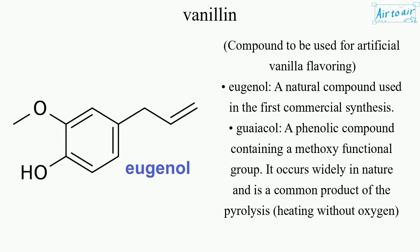Eugenol is a natural compound used in the first commercial synthesis of vanillin. Guaiacol is a phenolic compound containing a methoxy functional group. It occurs widely in nature and is a common product of the pyrolysis — heating without oxygen — of wood.